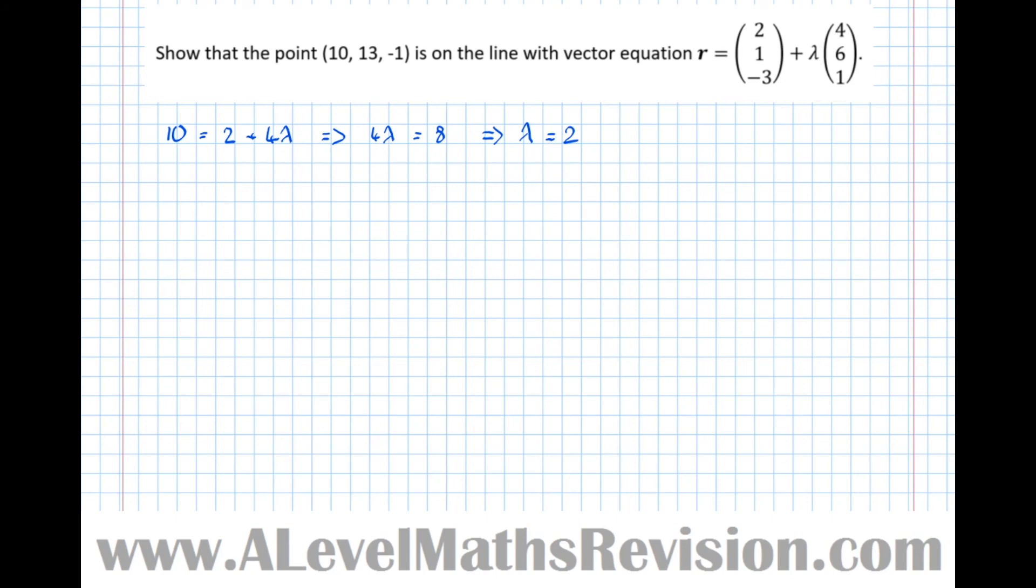So if the point is indeed on that line, it happens when lambda equals 2. So let's check this value of lambda now. So if we let lambda equal 2, this implies that R equals, so we've got (2,1,-3) plus 2 lots of (4,6,1). Which is equal to, okay, so 2 plus 2 lots of 4, 2 plus 8 is 10, 1 plus 12 is 13, and minus 3 plus 2 is minus 1, (10,13,-1).